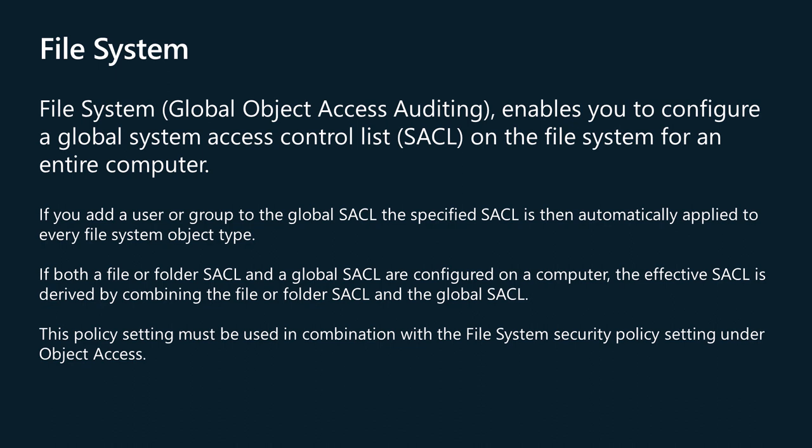The global object access auditing file system policy enables you to configure a global system access control list, SACL, on the file system for an entire computer. If you select the configure security checkbox on the policy's property page, you can add a user or group to the global SACL, enabling you to define computer system access control lists, SACLs, for the object type for the file system. The specified SACL is then automatically applied to every file system object type. If both a file or folder SACL and a global SACL are configured on a computer, the effective SACL is derived by combining them, meaning an audit event is generated if an activity matches either. This policy setting must be used in combination with the file system security policy setting under object access.